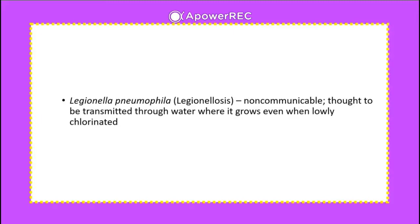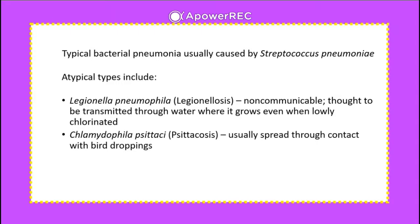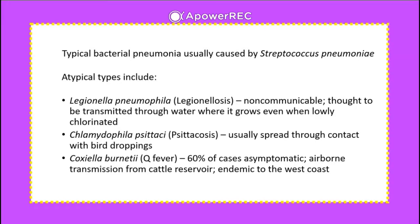Atypical bacterial pneumonia: one major causative agent is Legionella pneumophila, which causes legionellosis. This is non-communicable but is transmitted through water sources where it grows even when lowly chlorinated — such as indoor water systems, outdoor waterfalls, and showerheads. Typical bacterial pneumonia is caused by Streptococcus pneumoniae. Atypical cases also include Chlamydophila, which causes psittacosis and is spread through contact with bird droppings, and Coxiella burnetii, or Q fever, where 60% of cases are asymptomatic and airborne transmission from a cattle reservoir is the source; it is endemic to the west coast.